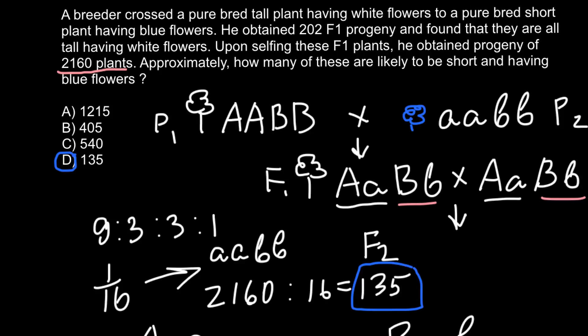There is also a shortcut: just remember that in a dihybrid cross, the 1 in the 9:3:3:1 ratio stands for the homozygous recessive genotype for both genes A and B, and it is one-sixteenth. That is all for today. Thank you for your attention. Please subscribe for my new videos, which I post almost every day. Thumbs up if you like this video, write your comments and questions if you have any, and see you in the next video. Goodbye!